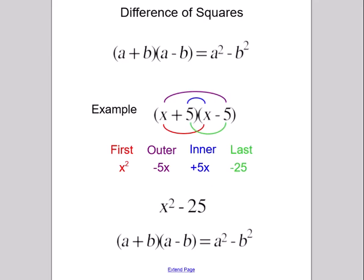First, multiply x times x getting x squared. Next, multiply the outer terms minus 5 and x to get minus 5x. Next, multiply the inner terms x and plus 5 to get plus 5x. And finally, multiply the last terms plus 5 and minus 5 to get minus 25.